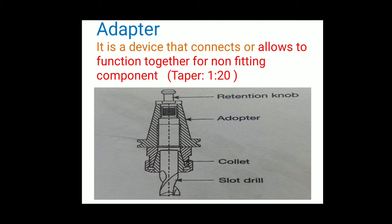The next point is the adapter. An adapter is a device that connects or allows non-fitting components to function together. In CNC, to match with the taper of the spindle, the taper of the adapter is approximately a 1 to 10 ratio. For example, a slot drill and a retention knob are connected using this adapter for a particular assembly.